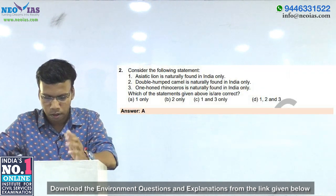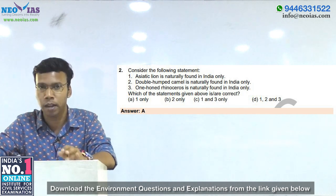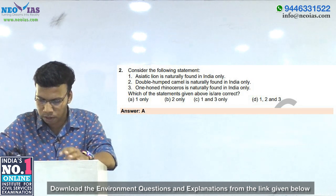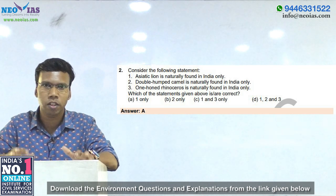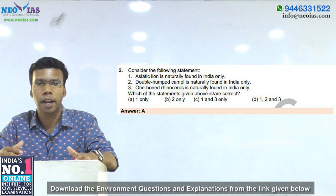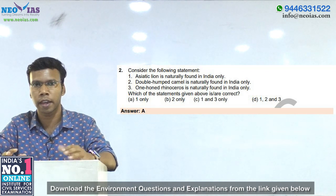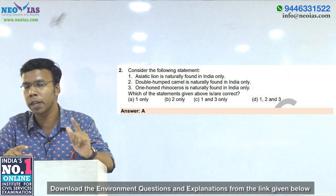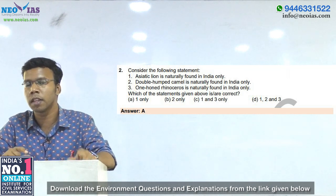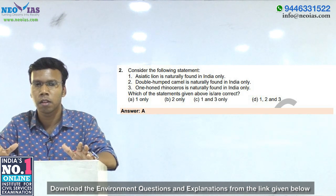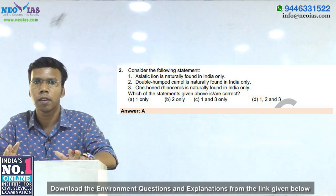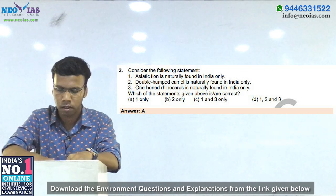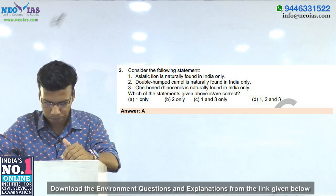Coming to the second question: consider the following statements. First: Asiatic lion is naturally found in India only. Second: double-humped camel is naturally found in India only. Third: one-horned rhinoceros is naturally found in India only. This question is also based on current affairs. Recently, some lions died in the Gir National Park due to canine distemper virus, and there was a lot of news about lions — mentioning that the Asiatic lion is naturally found only in the Gir forest area in Gujarat. So the first statement is correct.